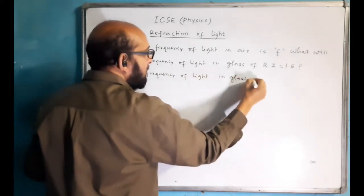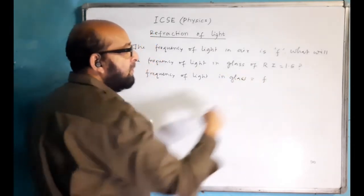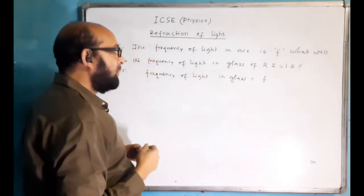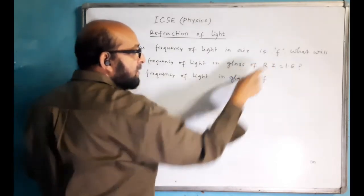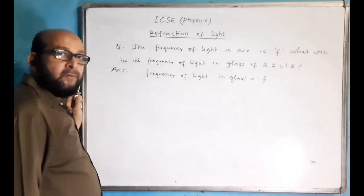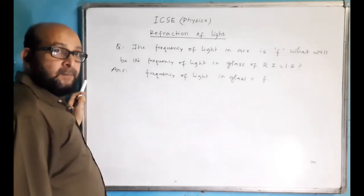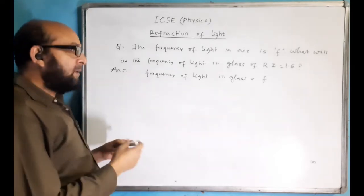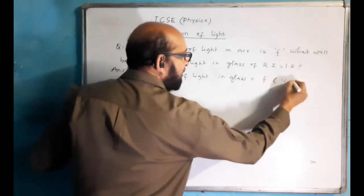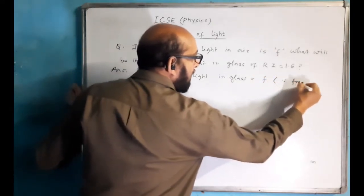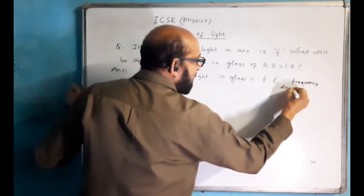The frequency of light in glass is equal to f. We will not do anything with the 1.5, because we know the fact that frequency is a property of a wave or of light which does not change when it travels from one medium to another. So the answer is simply f, since frequency does not change.